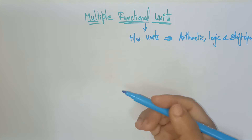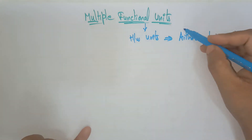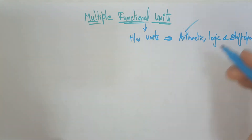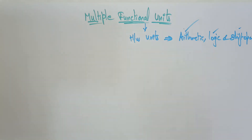Whatever the functional unit, each functional unit is going to perform a specific role. Suppose multiple functional units: one functional unit is performing arithmetic operations, another functional unit is performing logical operations, and another functional unit is performing shift operations. Each functional unit is a hardware unit which can perform either arithmetic, logical, and shift micro operations.